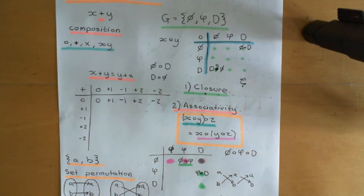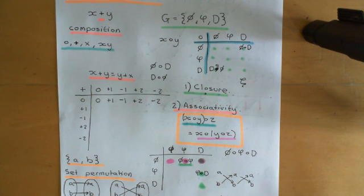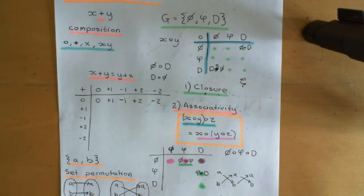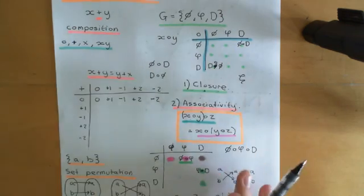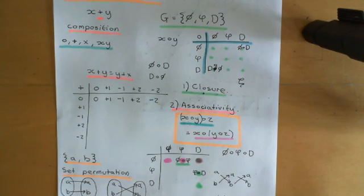Now, in order for that composition table to be considered a group, it has to obey certain properties. The first of which is closure — the answers that you put in have to be answers within the group. You can't have some new symbol zeta suddenly popping up which wasn't originally in your group, so it does need to obey closure.